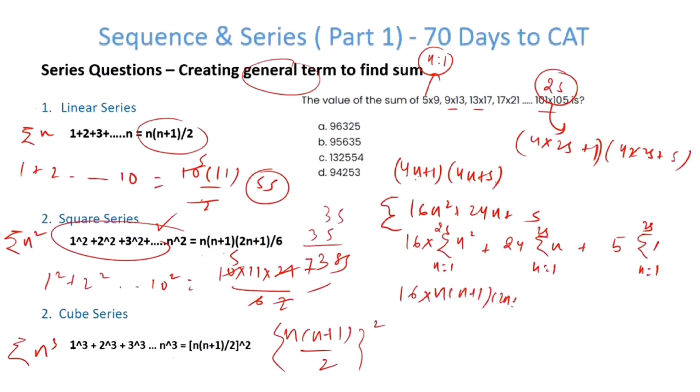16 times n(n+1)(2n+1)/6 for summation of n². Here I have 24 times summation of n, which is n(n+1)/2. Finally, if you add 1 n times, the answer is n. So here, 5×n. All we have to do is put n=25.